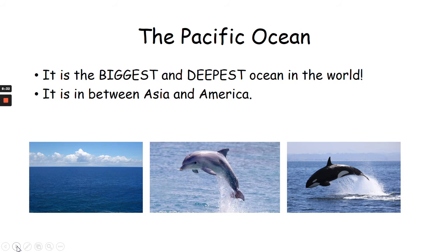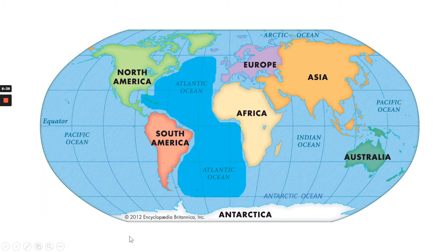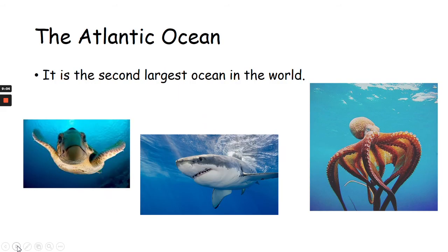It is in between Asia and America. So, we're going to look at the Atlantic Ocean. This body of water — look, it's between Africa and us here on this side of the UK. And it's between North America and South America. The Atlantic Ocean is the second largest ocean in the world.